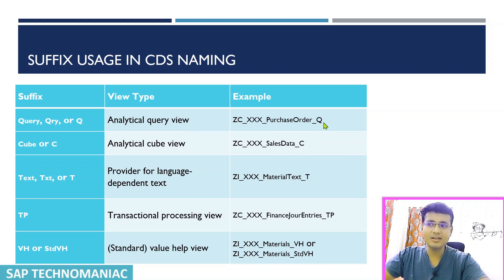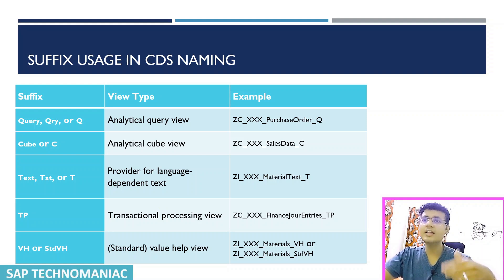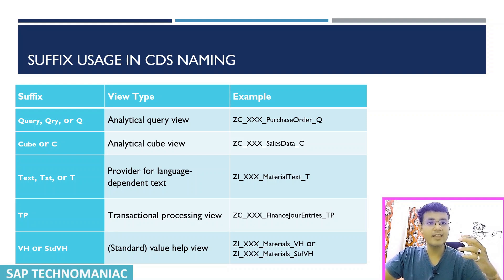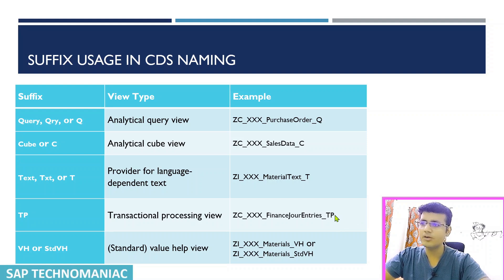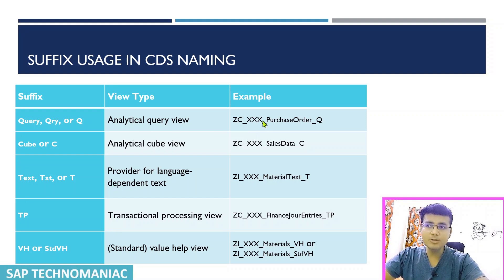For the text CDS view, use underscore T. For Fiori applications, some CDS views are used for transactional operations — like the travel CDS view used for CRUD operations. To indicate that, use the suffix underscore TP, which shows this CDS is used for the transactional process and has a behavior definition with CRUD operations. For value help CDS views, use either VH or STDVH — both are fine.